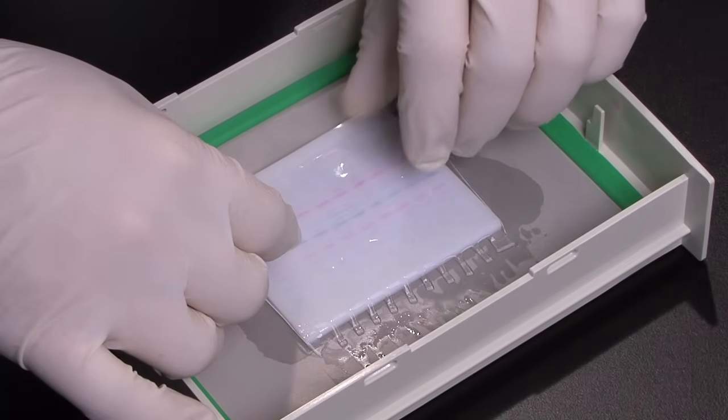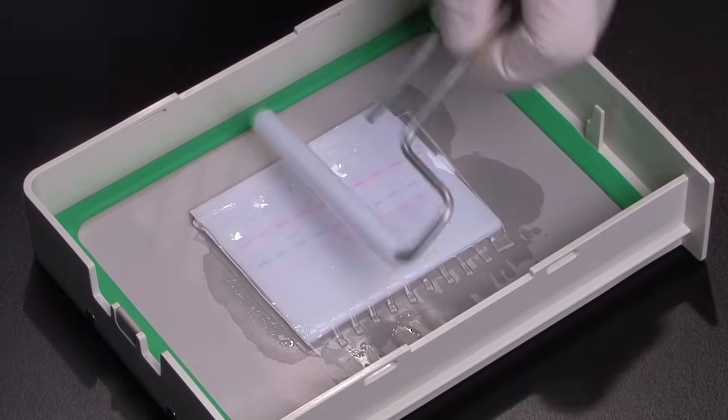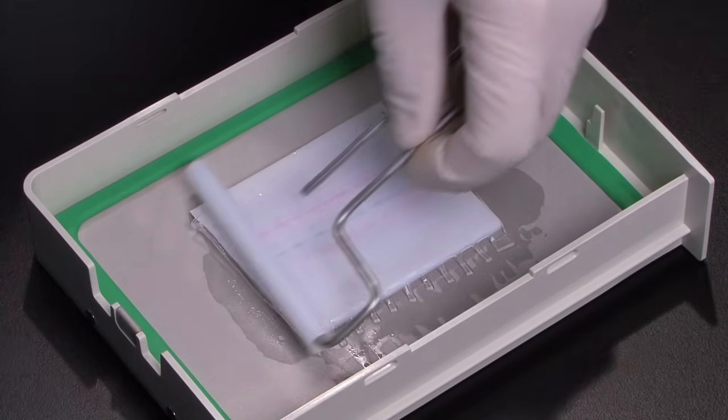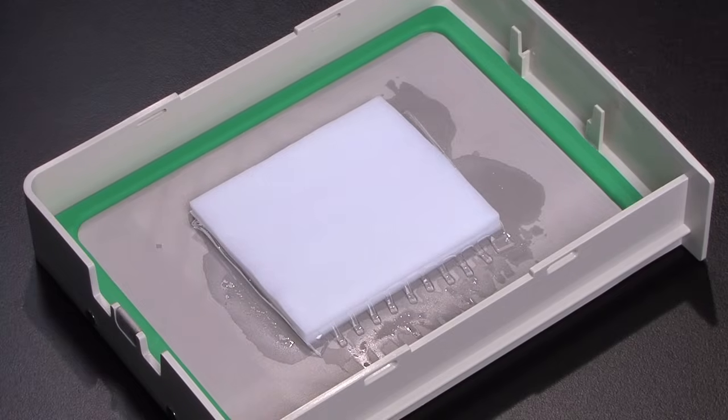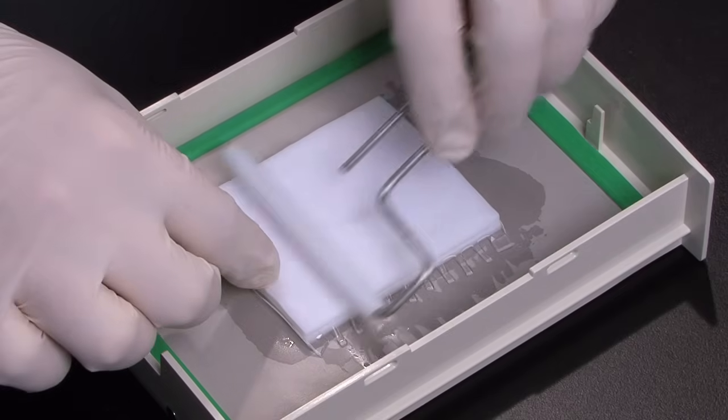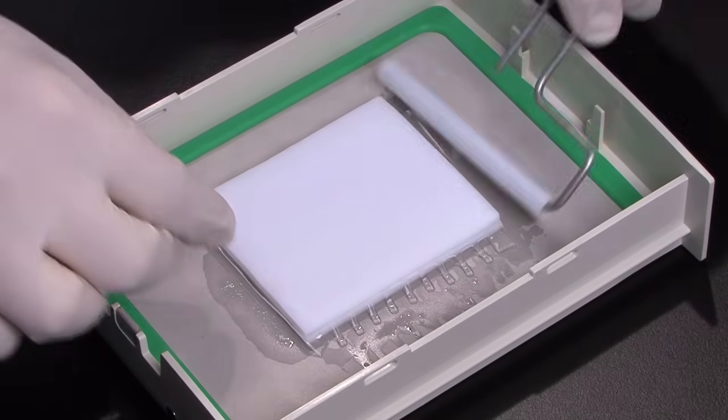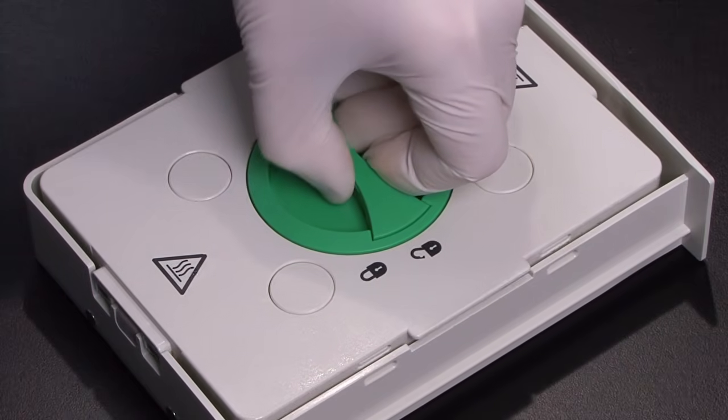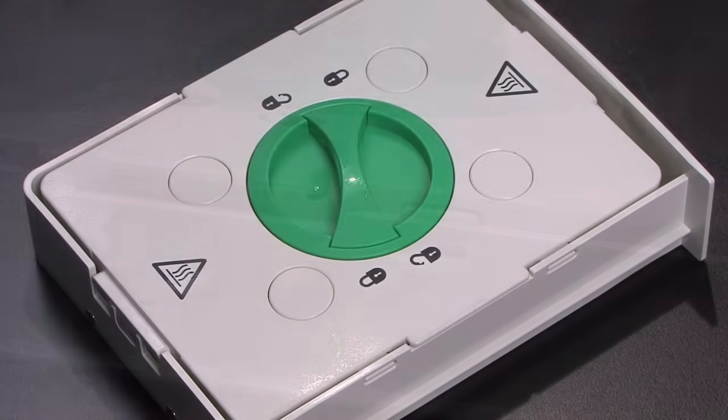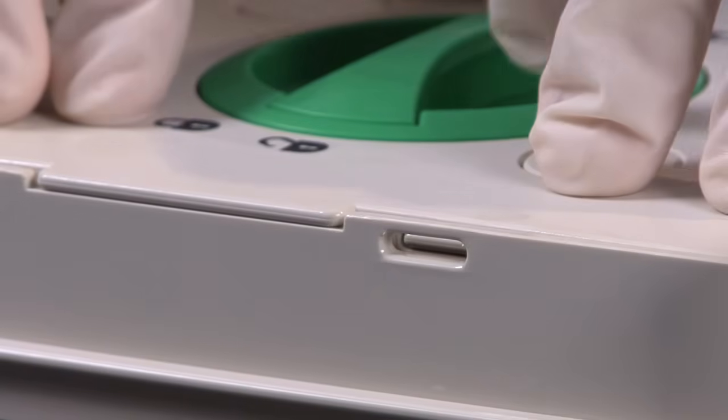Lay your gel on top of the membrane. With the trans-blot turbo, there is no need to equilibrate the gel and transfer buffer. Next, place the top stack on the gel. Roll again to remove bubbles. Place the cassette cover on top of the sandwich. Press down firmly and turn the knob clockwise to lock. You will know it's locked when you feel a click.